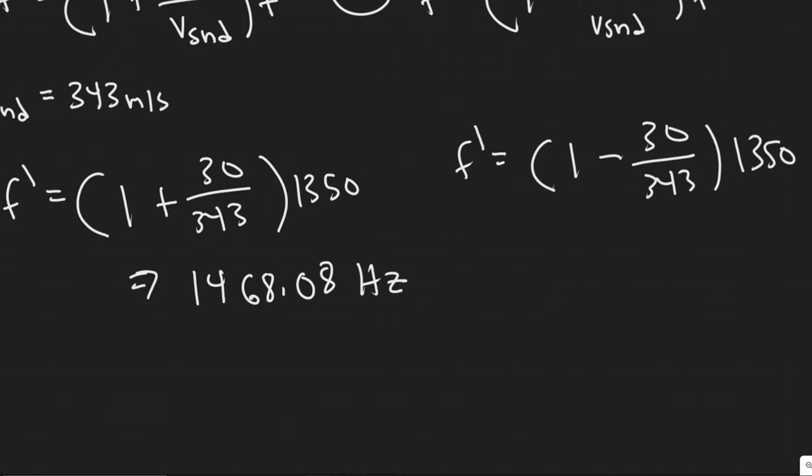Let's go figure out what this one is now. So 30 divided by 343, 1 minus that. Notice this one does decrease. So this one is going to be 1231.92.